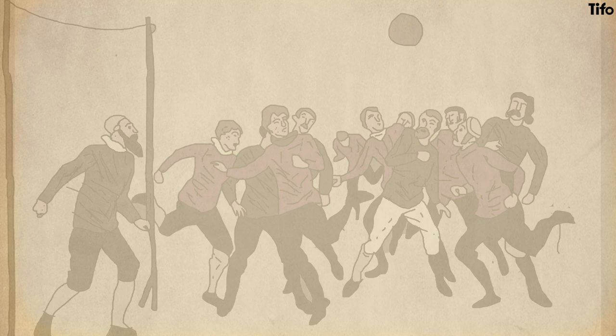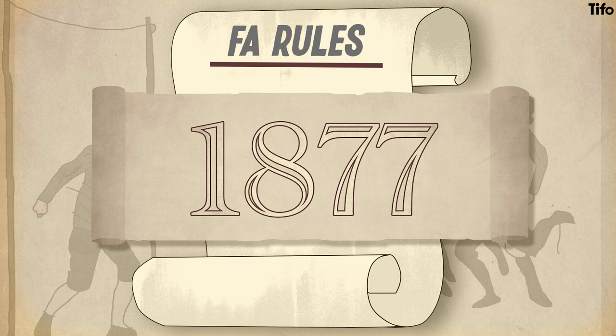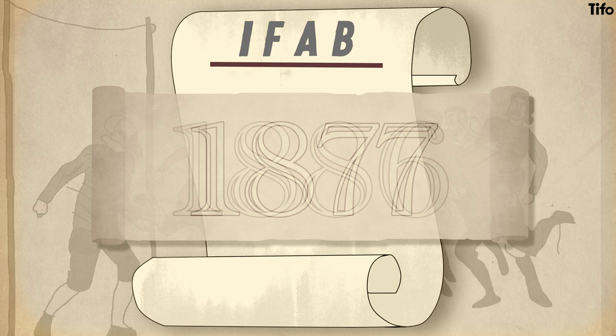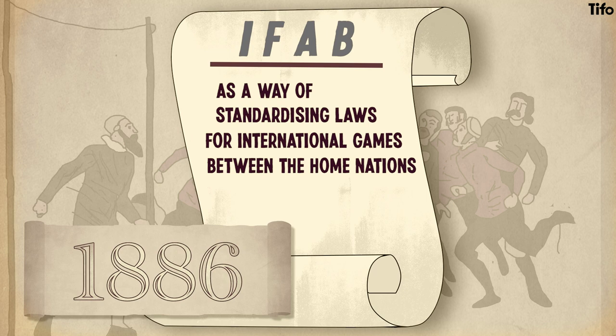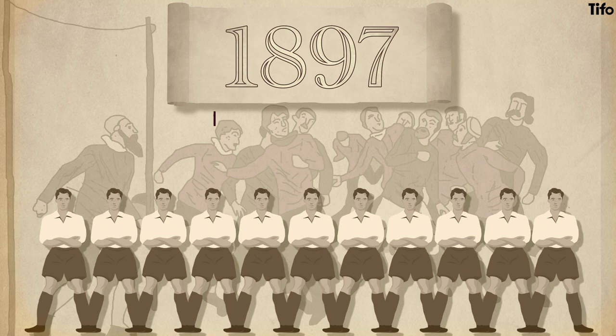Long after the Sheffield Association had adopted the FA rules in 1877, and the International Football Association Board — IFAB as it's commonly known today — had been founded in 1886 as a way of standardising laws for international games between the home nations, eleven players became IFAB law in 1897. But why did it become informally standardised before then?